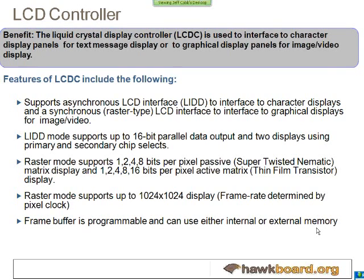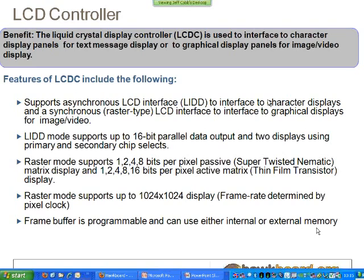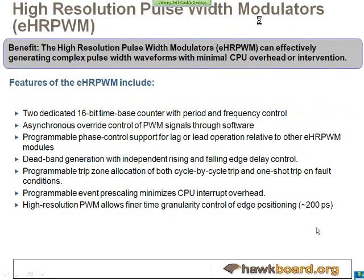The LCD controller — available via the expansion header on the Hawkboard — has a maximum pixel clock of 37.5 MHz, giving a maximum resolution of around 800x600 at 60 frames per second. The controller itself supports up to 1024x1024 resolution at lower refresh rates. Two modes are supported: LID mode for character displays with a built-in frame buffer, and raster mode for connecting to an LCD for video or graphics output.